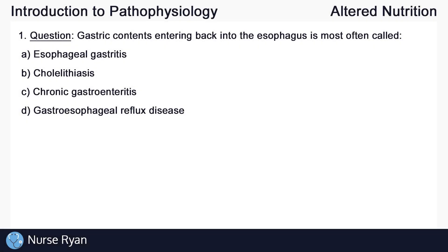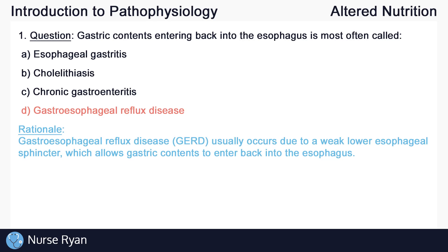Starting off with question number one: gastric contents entering back into the esophagus is most often called — I'll leave a bit of a break where you can pause the video and think about the answer. The answer here is D, gastroesophageal reflux disease, or GERD, which usually occurs due to a weak lower esophageal sphincter, which allows gastric contents to enter back into the esophagus.